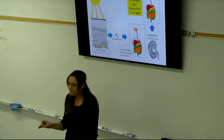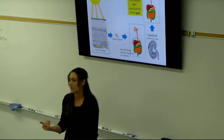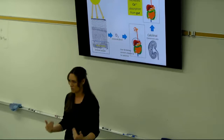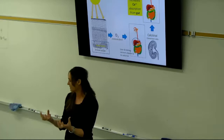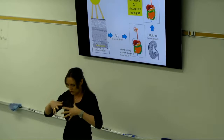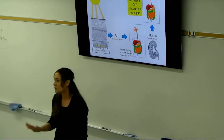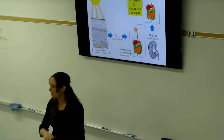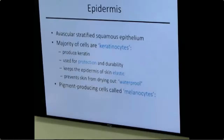Children with rickets have very rubbery bones with a hallmark bowed-out leg appearance because their torsos are too heavy for their calcium-depleted bones to support. This is why we fortify food with vitamin D. Rickets is very rare today because of fortification. This all connects to melanocytes. The epidermis is avascular — zero blood vessels — because it's epithelial tissue.